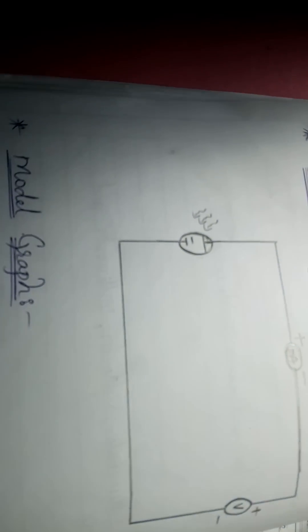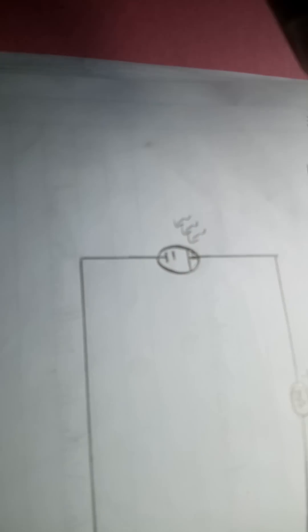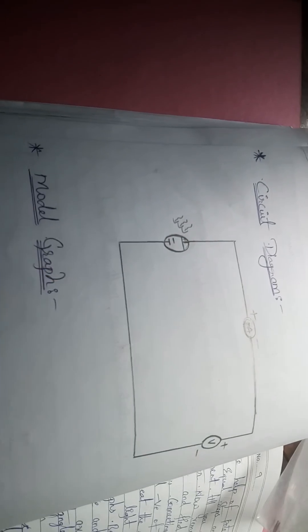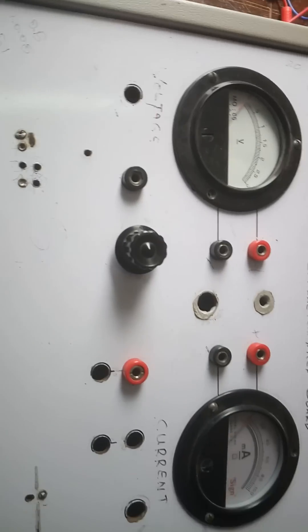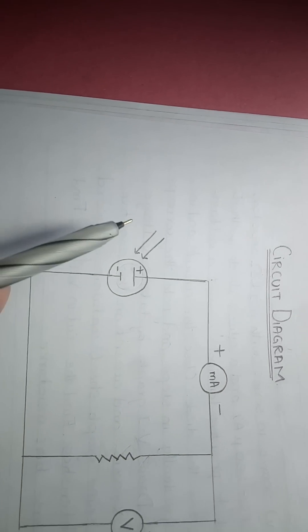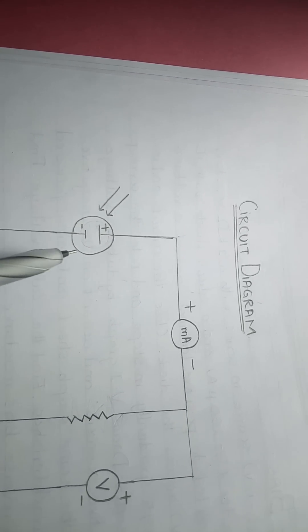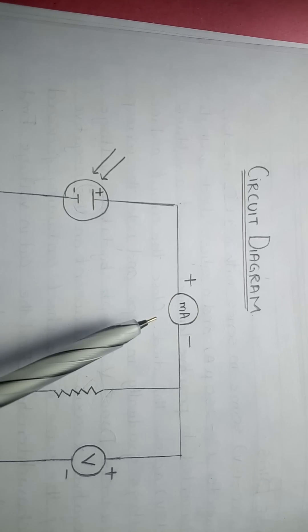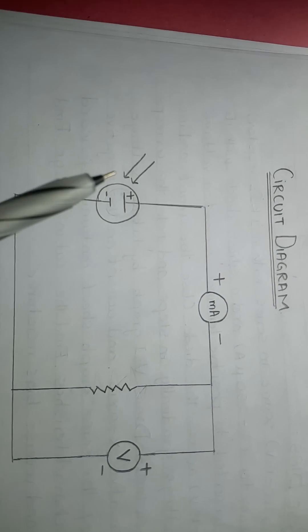Now we will connect the circuit diagram. In the circuit diagram, the solar cell symbol is shown on the left side with three lines indicating photons falling on it. The circuit includes an ammeter, voltmeter, and a resistance. We start the circuit connection from the positive terminal of the solar cell.